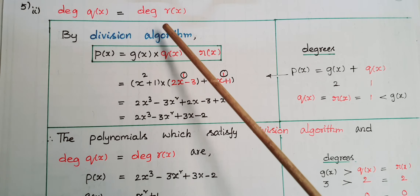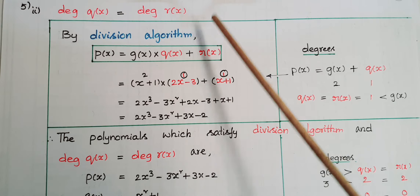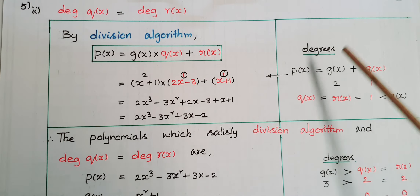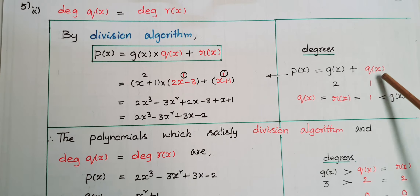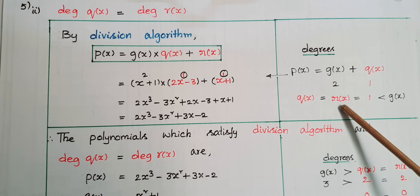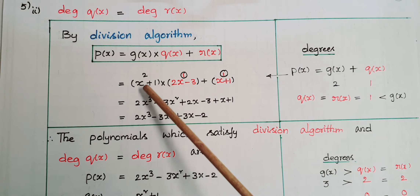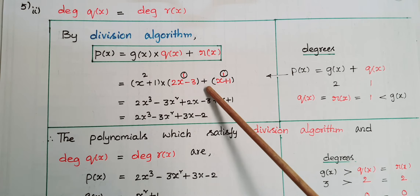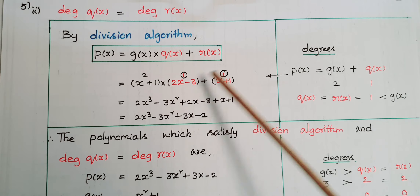Second part: degree of q(x) equals degree of r(x). We need polynomials satisfying the division algorithm with degree of q(x) equal to degree of r(x). Assume degree of q(x) = 1, so degree of r(x) = 1 also. Since degree of r(x) must be less than degree of g(x), assume degree of g(x) = 2. So take g(x) = x² + 1, q(x) = 2x − 3, and r(x) = x + 1.